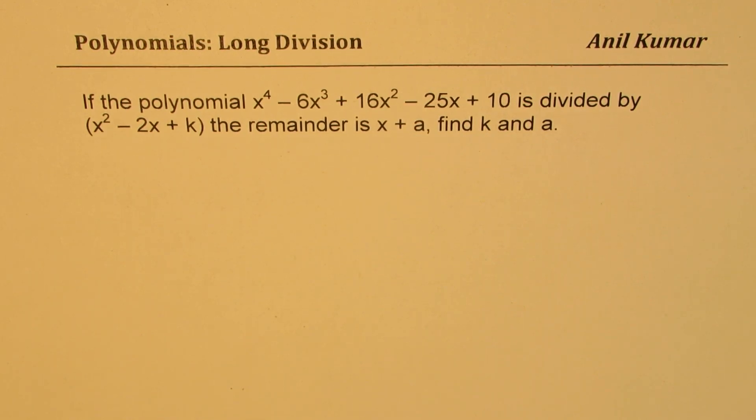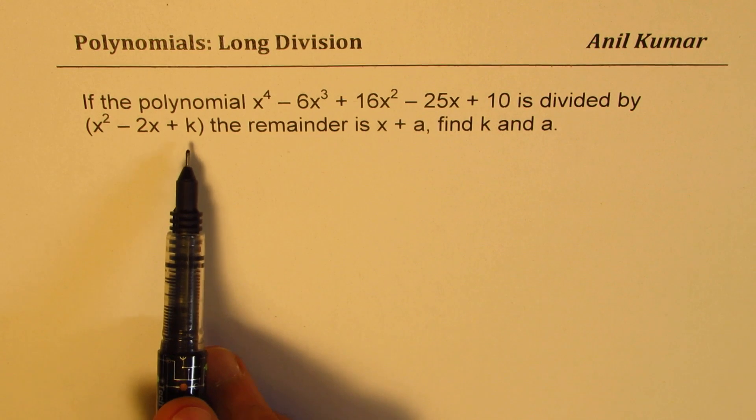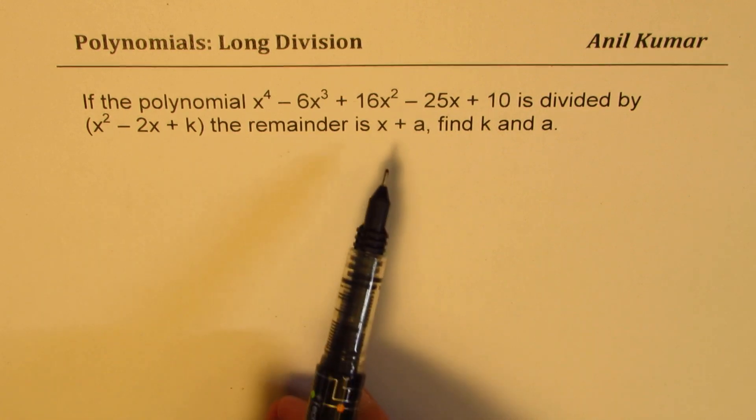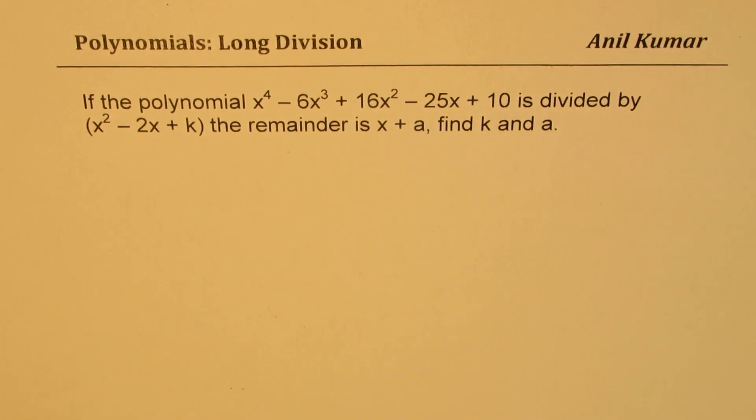Now since the divisor has unknown parameter k and we need to find two different parameters k and a, it's kind of a difficult question. Let's see how to solve it.